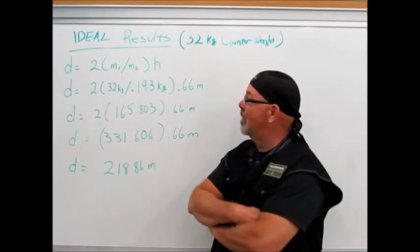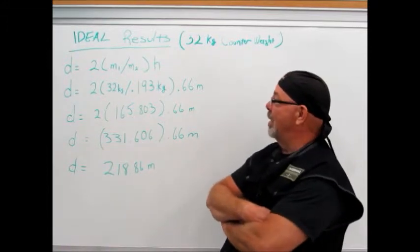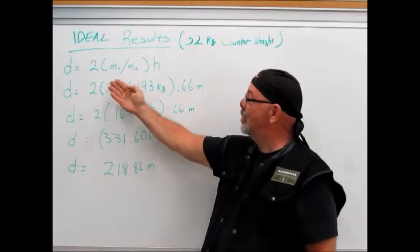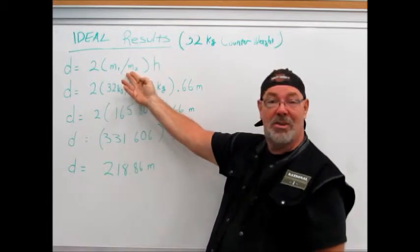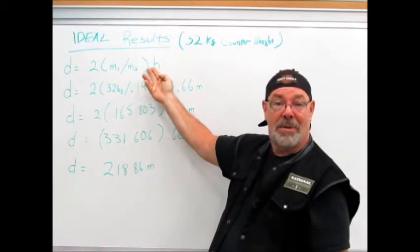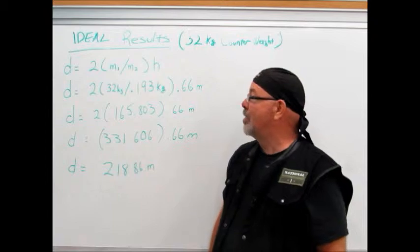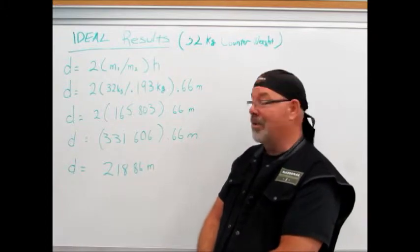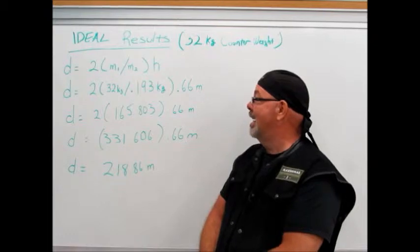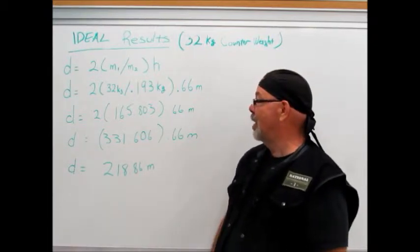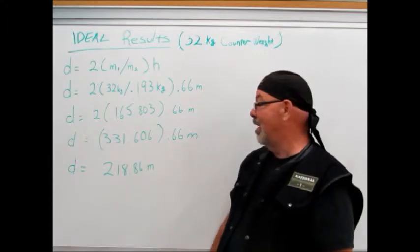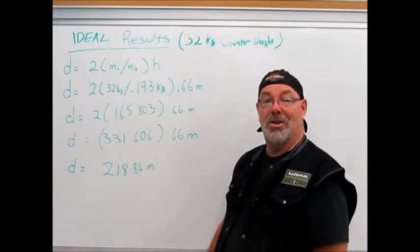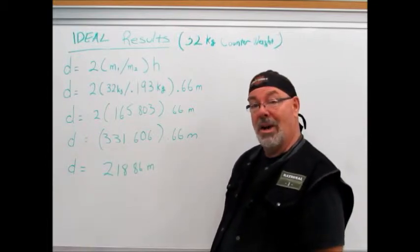Our ideal results using a 32 kilogram counterweight: the distance should equal 2 times mass 1, which is the mass of the counterweight, divided by mass 2, the mass of the object thrown, times the height of the drop of the counterweight. In this case, that would be 2 times 32 kilograms divided by 0.193 kilograms times 0.66 meters. That would be 2 times 165.803 times 0.66 meters, which works out to 331.606 times 0.66 meters. So our distance for the ideal shot on the perfect condition should be 218.86 meters with the 32 kilogram counterweight.